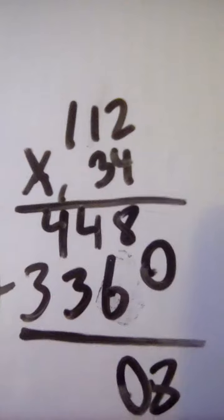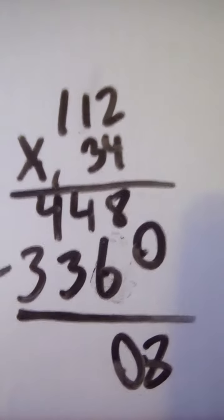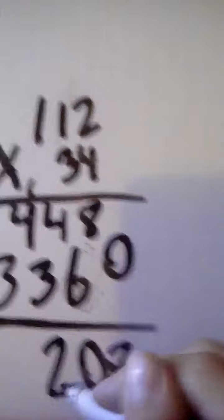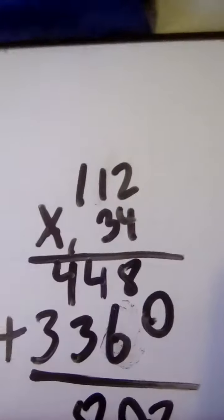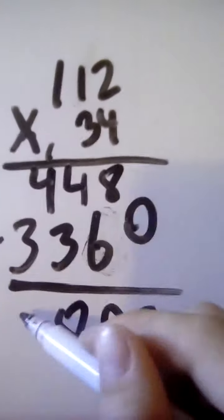Then 4 plus 3 equals 7. 7 plus 1 equals 8. Okay, then we bring that 3 right here down here.